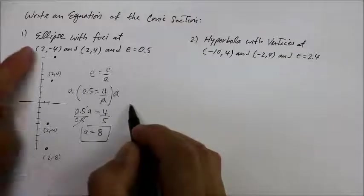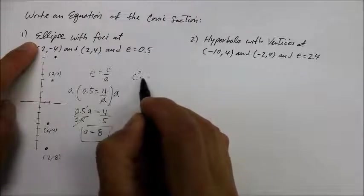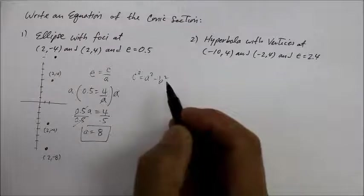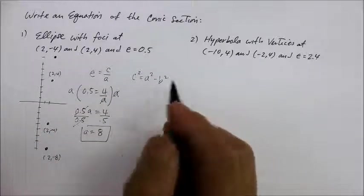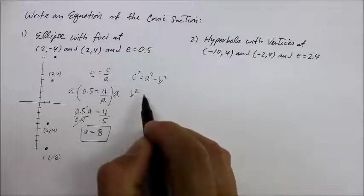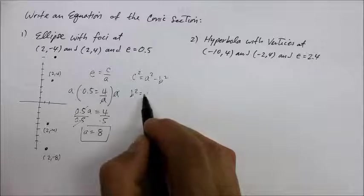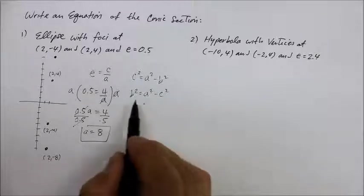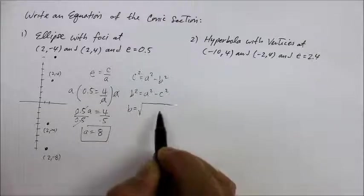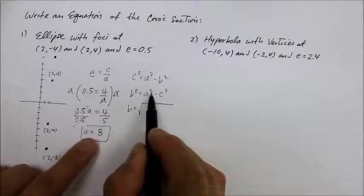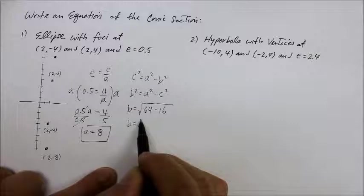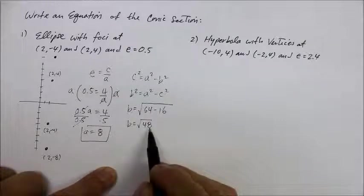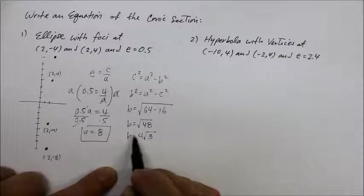To find b, remember in an ellipse the formula for the focus is c squared equals a squared minus b squared. I have a equals eight and c equals four, so I need to solve for b. Rearranging: b squared equals a squared minus c squared — that's eight squared (64) minus four squared (16), giving b squared equals 48. So b equals the square root of 48, which simplifies to four square root of three.